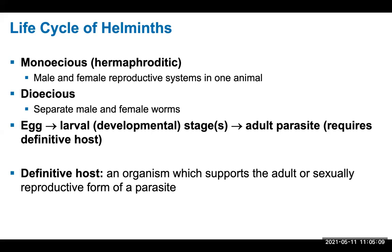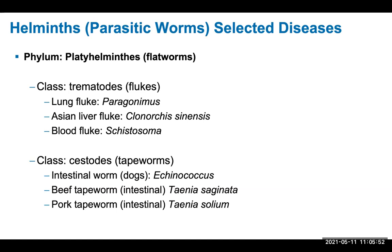Some terminology: monoecious or hermaphroditic means both male and female reproductive systems are found in one animal. Dioecious means separate male and female worms. Development generally goes from egg to larva to adult worm, though some have multiple types of eggs or larvae before reaching adult form. The definitive host is an organism which supports the adult or sexual reproduction form of a parasite — sexual reproduction of the parasite occurs in that host.